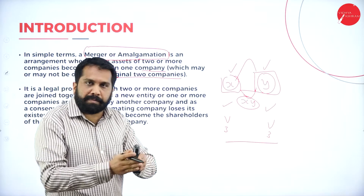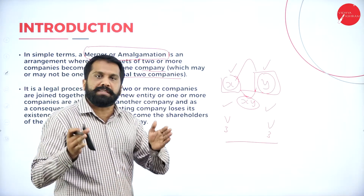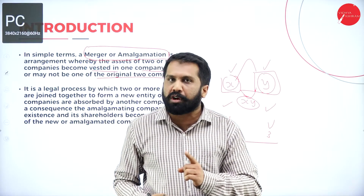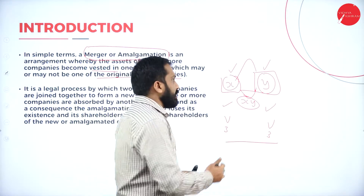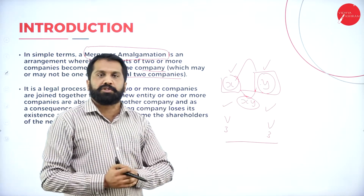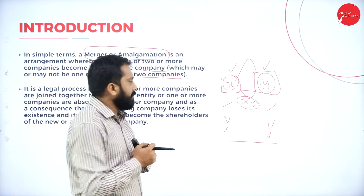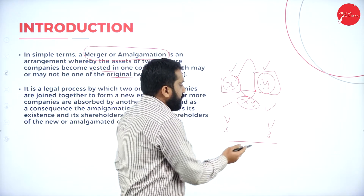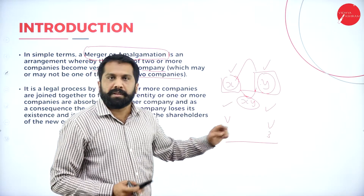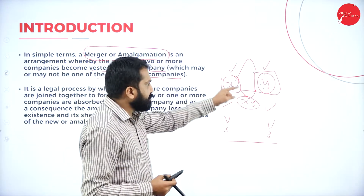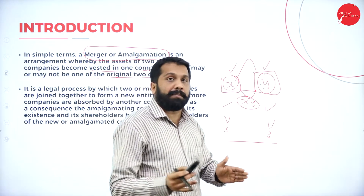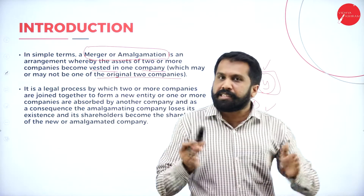They amalgamated and merged — two shops into one shop named XY. What happened? The small jewelry shop has become a big jewelry shop. Now, 90% of the people will go to this shop only, because old customers won't leave, and new customers, seeing this big shop, rush in. This is called amalgamation.